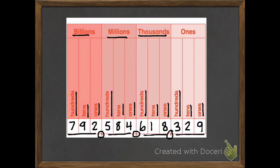And then 329. If you can say a three-digit number, you can go as high as you know the periods. Let me say this whole thing all at once now. We have 792,584,618,329. You don't have to say ones at the end.